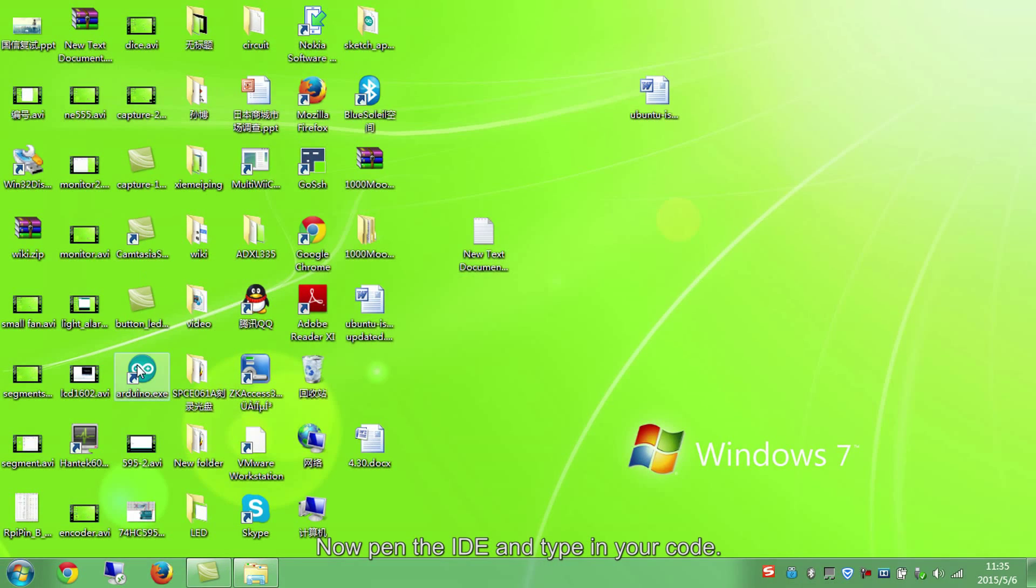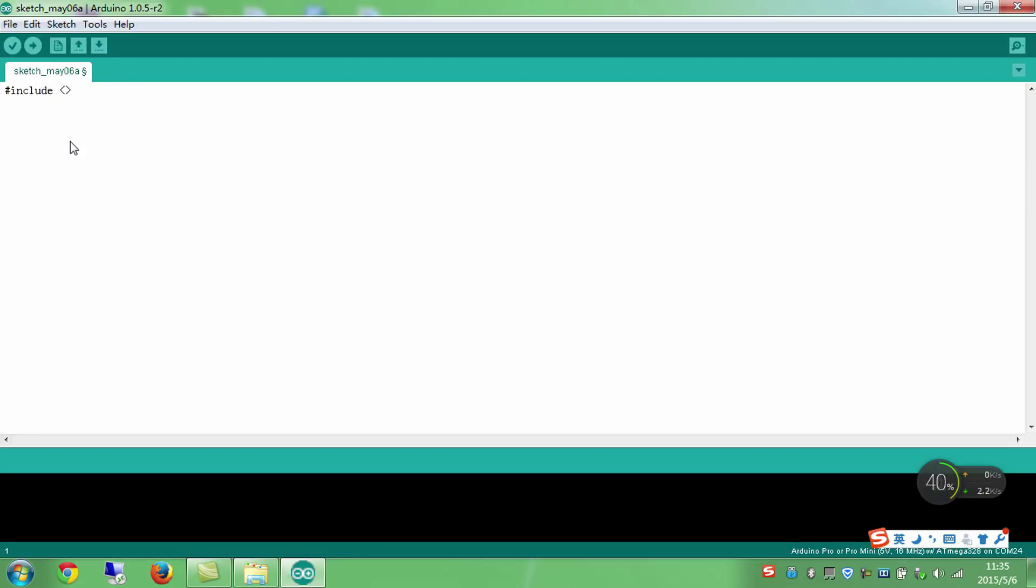Now open the IDE and type in your code. In this experiment, we need to quote an outside library liquid crystal. So add an include header file. Here I create a liquid crystal variable named LCD. All the subsequent liquid crystal statements are written in this format: LCD.function.